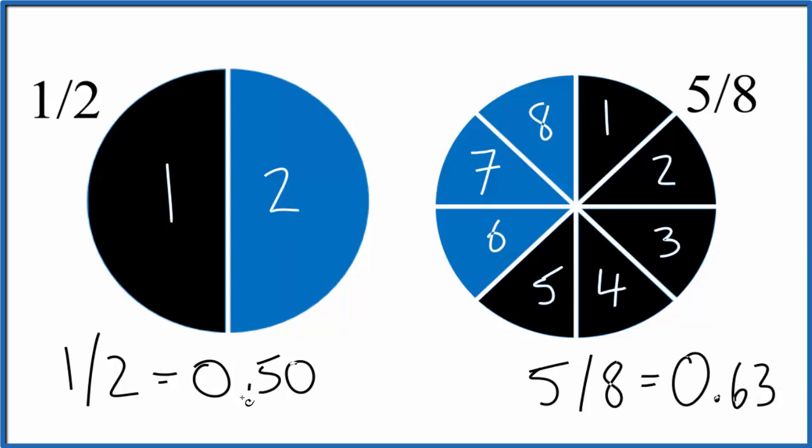0.63 is larger than 0.50. This is Dr. B looking at which is larger, 1 half or 5 eighths. Turns out, 5 eighths is a larger number. Thanks for watching.